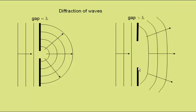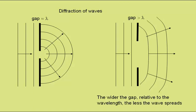If we send the same wave through a bigger gap, in this case the gap is bigger than the wavelength, we get less spreading. The wider the gap relative to the wavelength, the less the wave spreads.